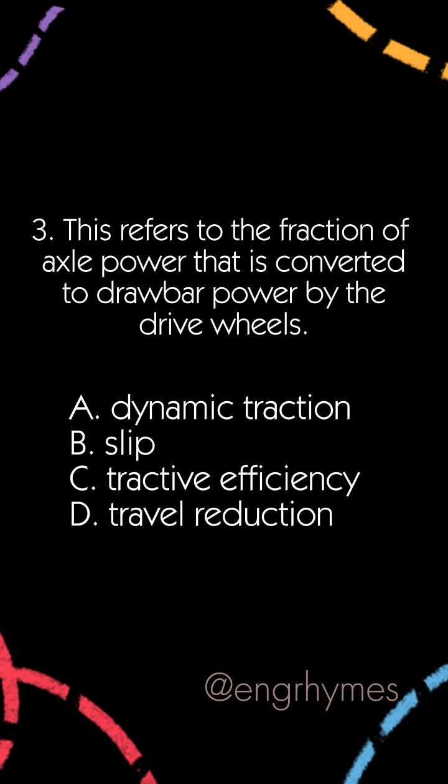This refers to the fraction of axle power that is converted to drawbar power by the drive wheels. A. Dynamic traction. B. Slip. C. Tractive efficiency. D. Travel reduction.